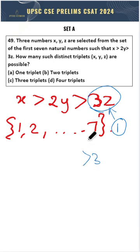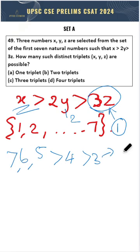Considering z as 1, I will get 3 here and 2y, I can consider y as 2 which will give me 4. So x can take 5 or 6 or 7. So already three triplets have formed.